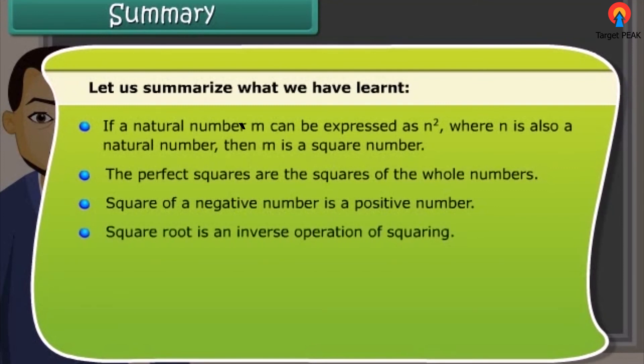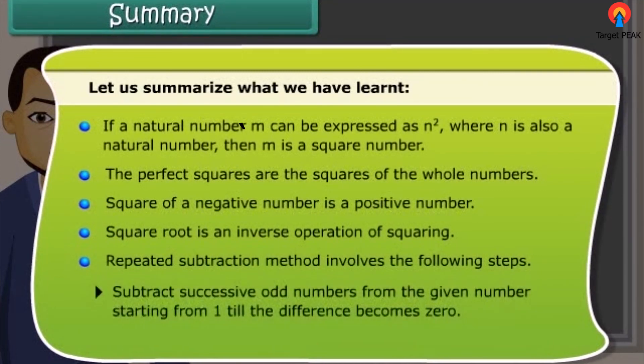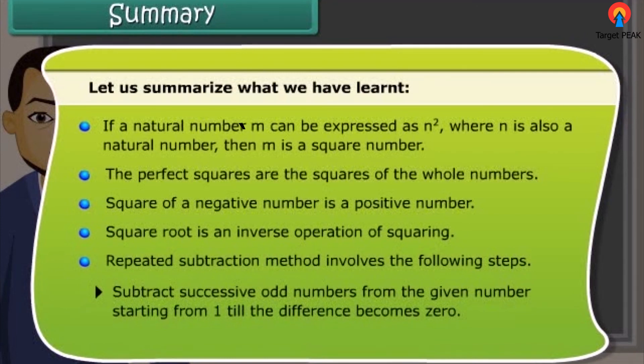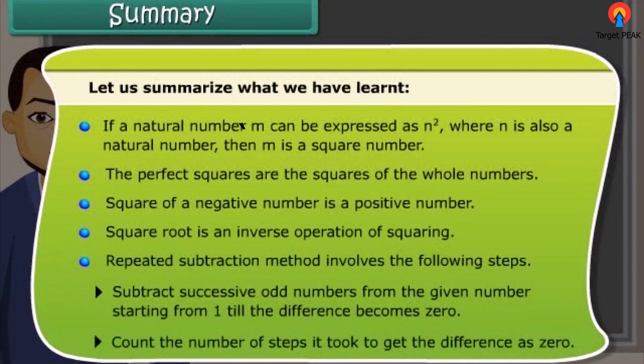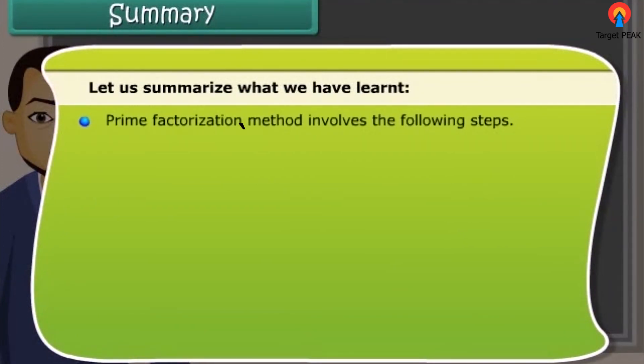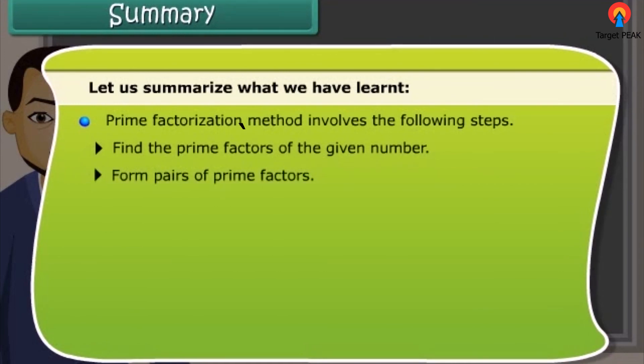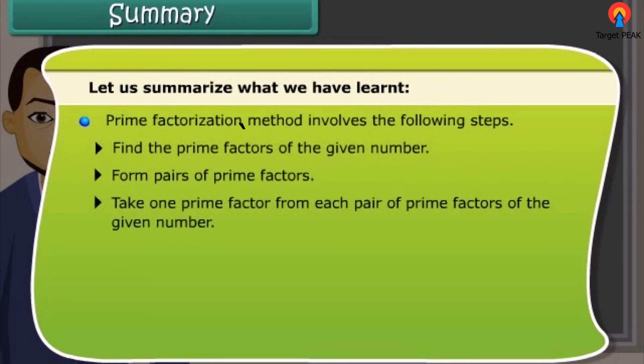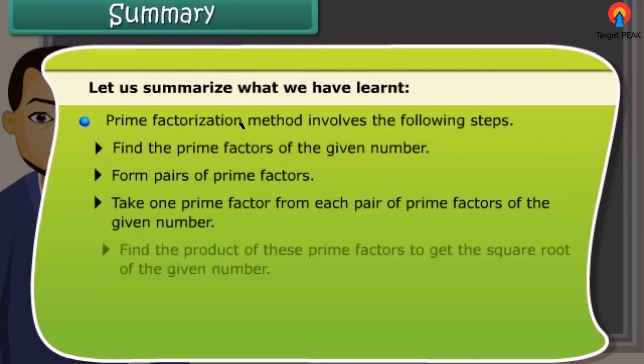Repeated subtraction method involves the following steps. Subtract successive odd numbers from the given number starting from 1 till the difference becomes 0. Count the number of steps it took to get the difference as 0. Prime factorization method involves the following steps: find the prime factors of the given number, form pairs of prime factors, take one prime factor from each pair, find the product of these prime factors to get the square root of the given number.